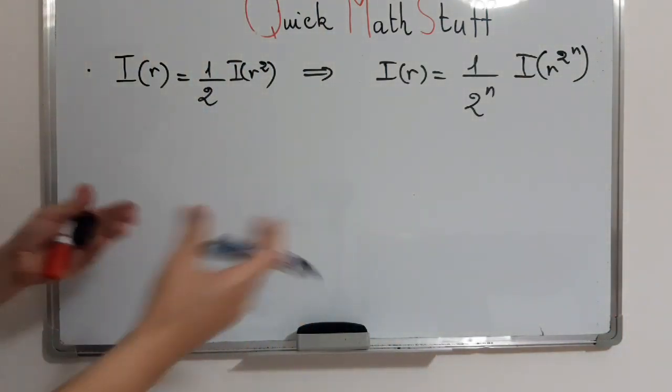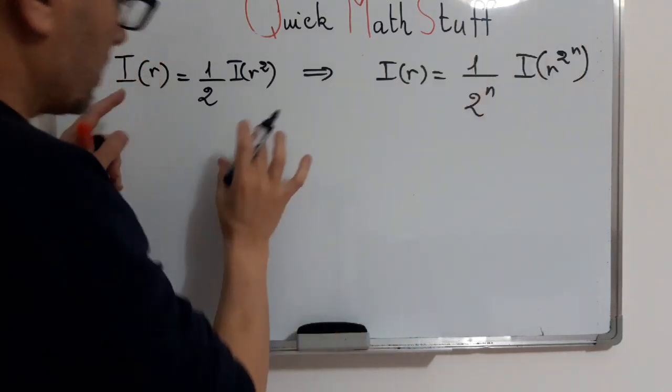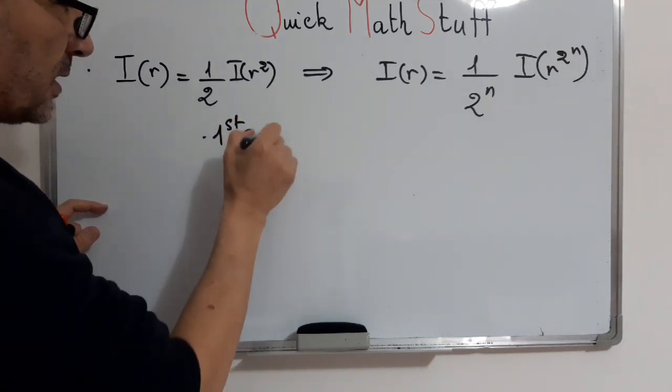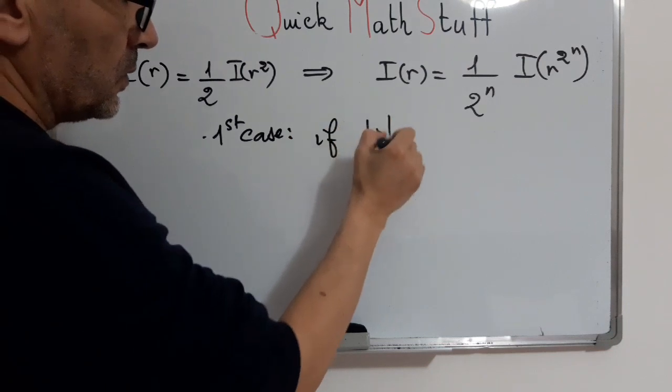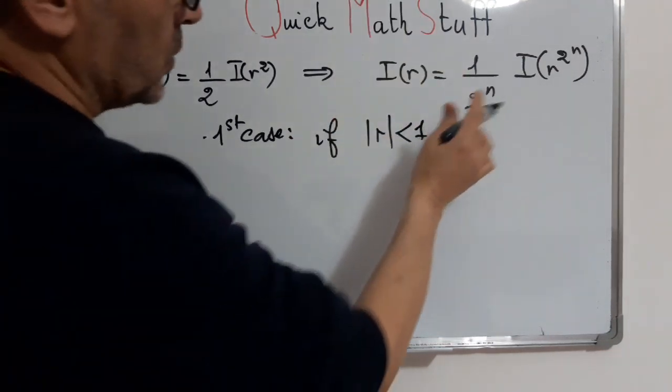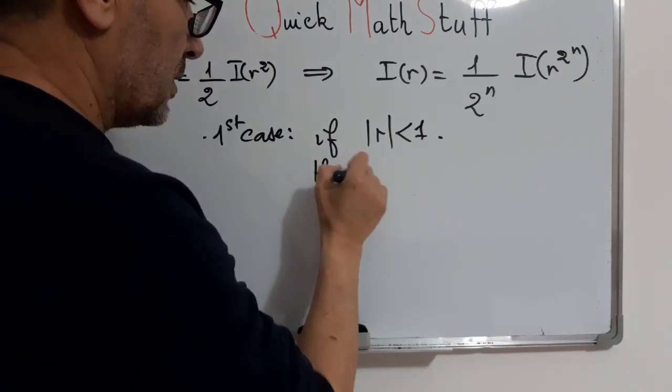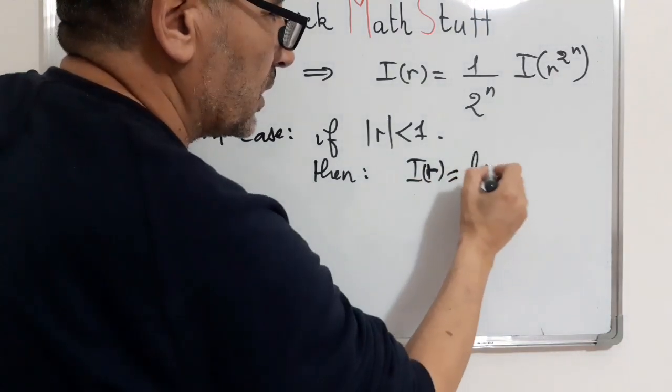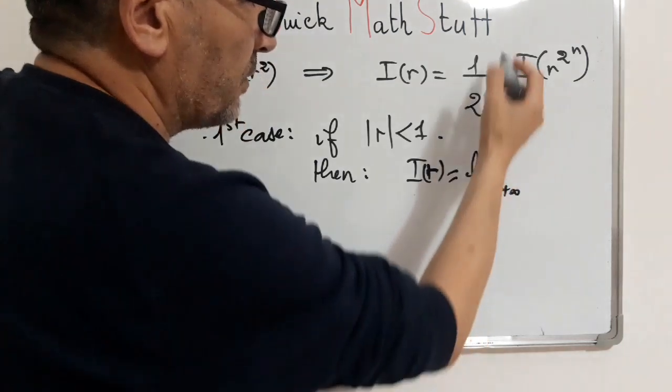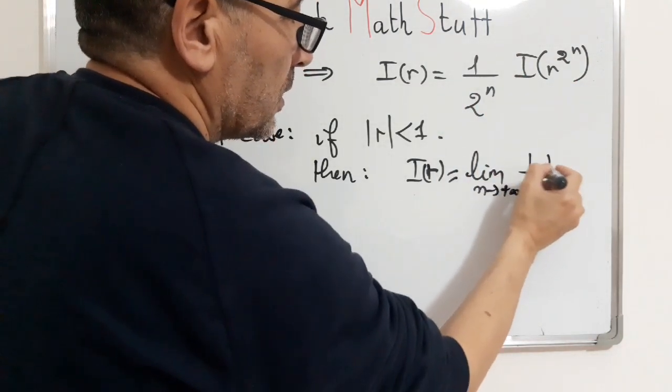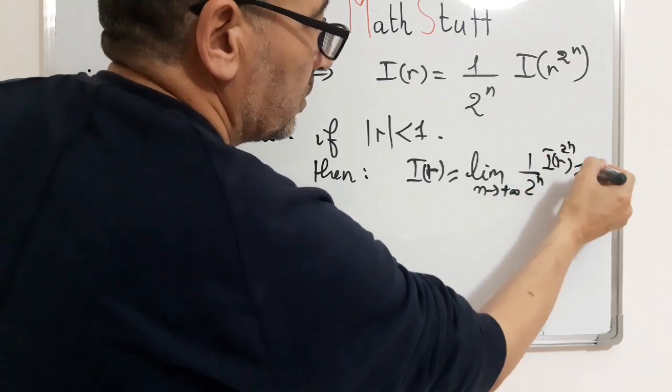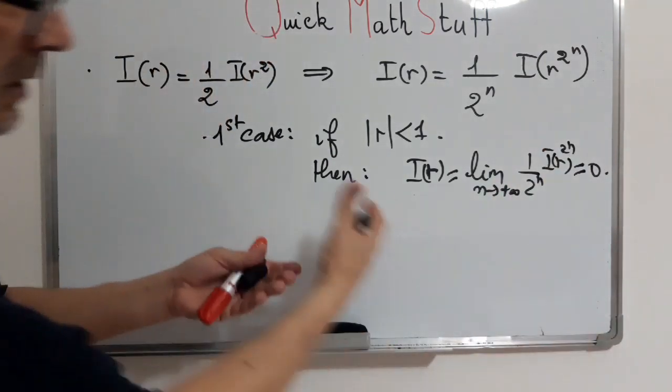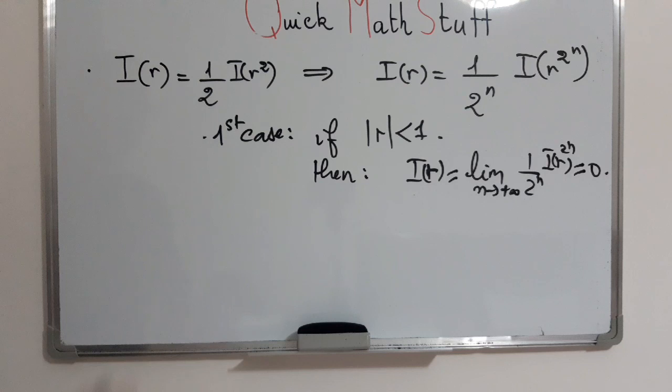Now the easy idea is to let n go to infinity, but under some assumptions. First case, if absolute value of r is less than 1. It's easy to conclude that I of r will be equal to the limit as n goes to infinity of this term, 1 over 2 to the n times I of r to the 2 to the n, which will equal 0, because this goes to 0 and I of 0 is real, so the product equals 0.